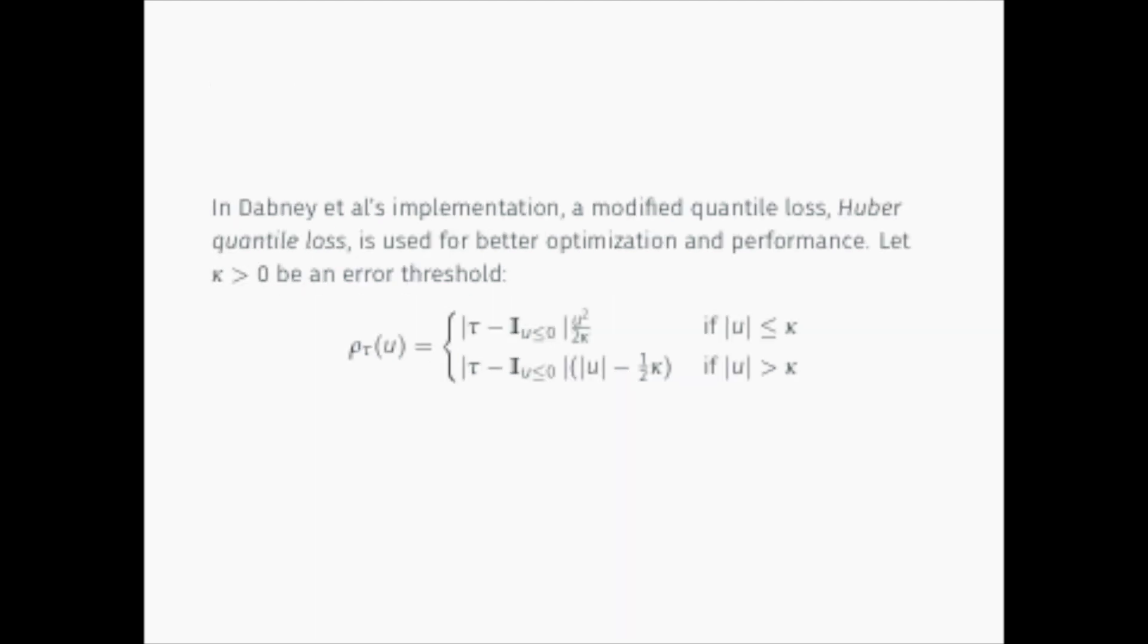Another major novelty point in IQN is a modified quantile loss, termed Huber quantile loss. The authors claim this formulation leads to better optimization and better final performance.